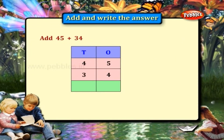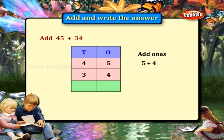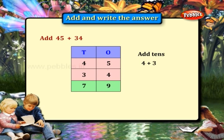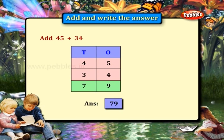45 plus 34. Add the 1's place: 5 plus 4 is equal to 9. Add the 10's place: 4 plus 3 is equal to 7. Answer: 79.